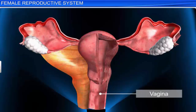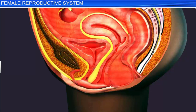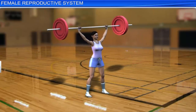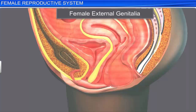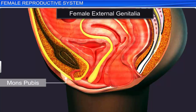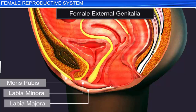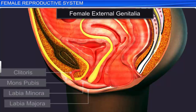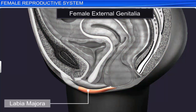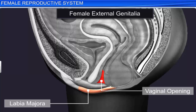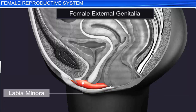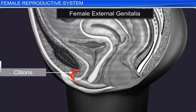The vagina is a muscular tube starting from the lower end of the uterus up to the outside. The opening of the vagina in young females is partially covered by a thin membrane called the hymen. The hymen is frequently ruptured in childhood due to strenuous physical exercise. The female external genitalia includes the mons pubis, labia majora, labia minora, and the clitoris. The labia majora consists of fleshy folds of tissues that extend down from the mons pubis and surround the vaginal opening. Hidden under the labia majora is the labia minora. Towards its upper end lies the clitoris, a small finger-like structure, and below it is the urethral opening.